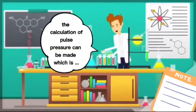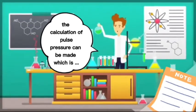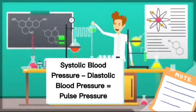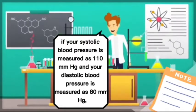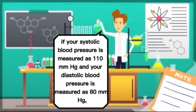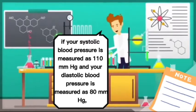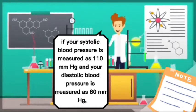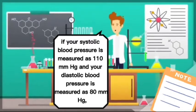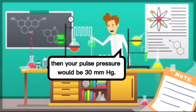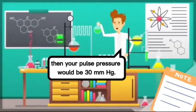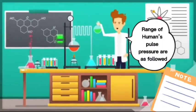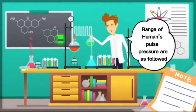The calculation of pulse pressure is systolic blood pressure minus diastolic blood pressure. For example, if your systolic blood pressure is 110 mmHg and your diastolic blood pressure is 80 mmHg, then your pulse pressure will be 30 mmHg. The normal range of human pulse pressure is as follows.